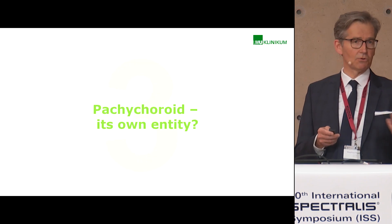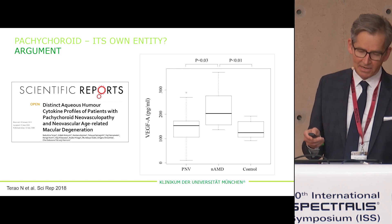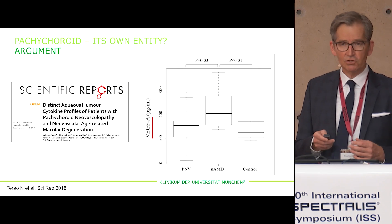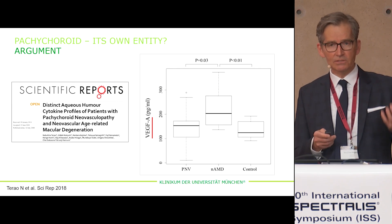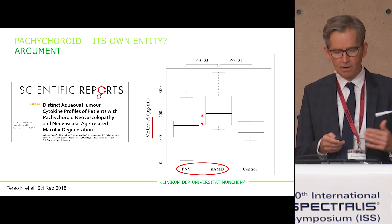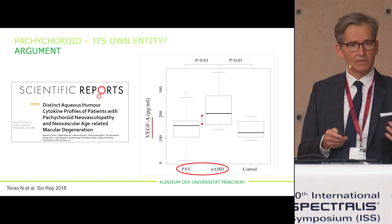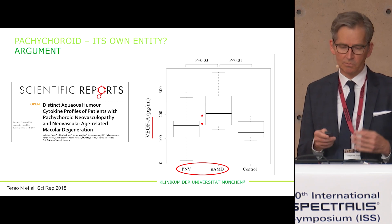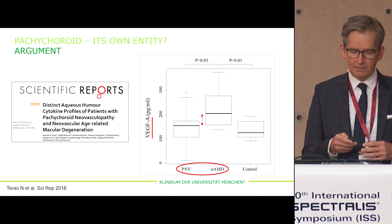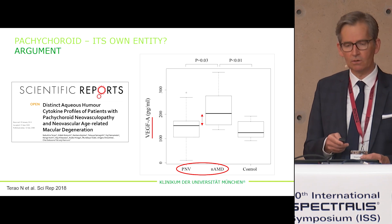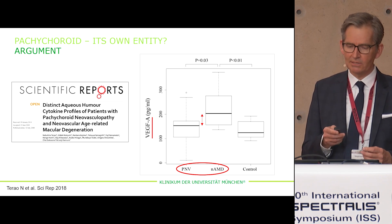Is Pachychoroid its own entity? It might be. Investigations have shown that the concentration of EGF is much lower in PNV in contrast to AMD, so it might be that those two are distinct entities.